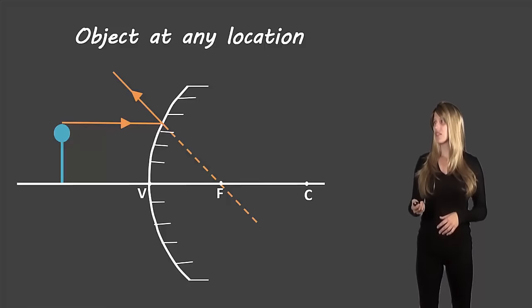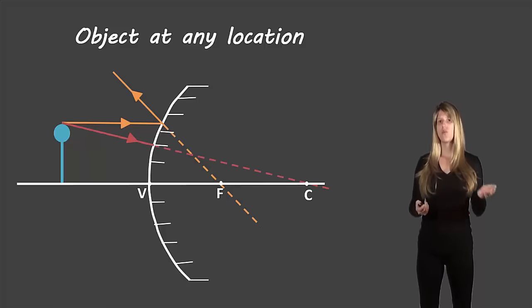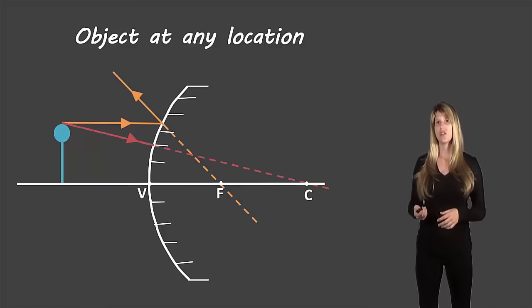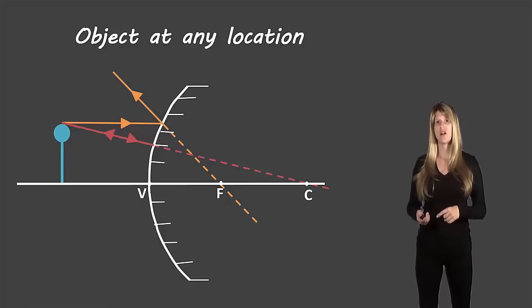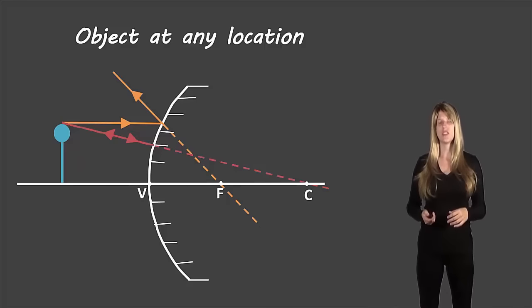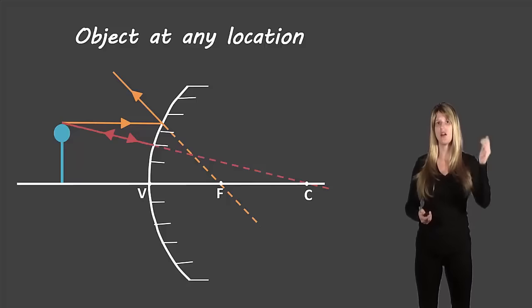Our next rule is that light traveling towards the center of curvature will reflect back along the same line. Just like what we saw last time when we used the rule with the center of curvature we need to put an arrowhead in each direction on that same line to indicate the light going in and coming out is along the same line. With our other rules there's just one arrowhead for each line but here we need to draw the arrowhead to show it's going both ways along the same line.